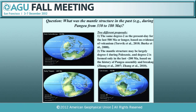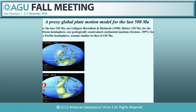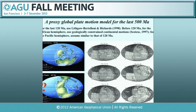We focus on our own work to discuss this particular view. We build a global proxy plate motion model for the last 500 million years. For the last 120 million years, we use published models from Lithgow-Bertiloni and Richards and Mueller's model. Before 120 million years ago, for the African hemisphere we use geologically constrained continental motions, and for the Pacific we assume plate motion is largely consistent with upwelling or divergent flow. We use this to drive mantle convection, similarly to McNamara and Zhong in 2005, showing average plate motion versus time with quite a lot of variability.